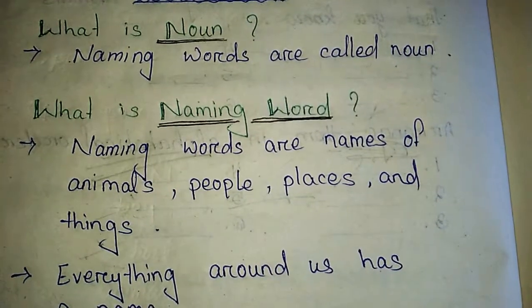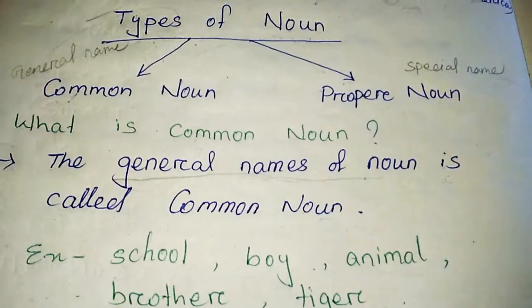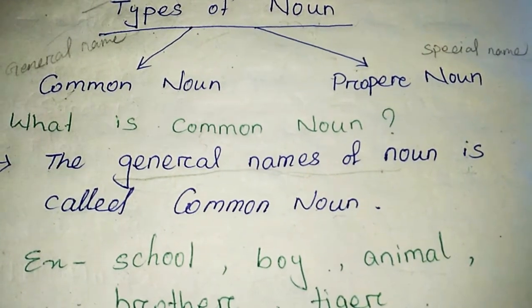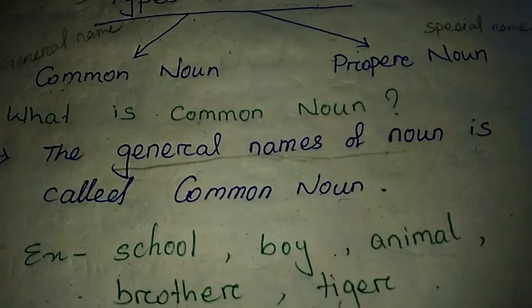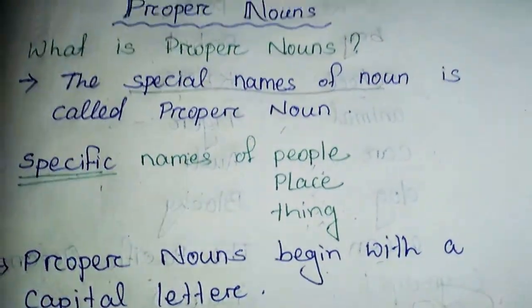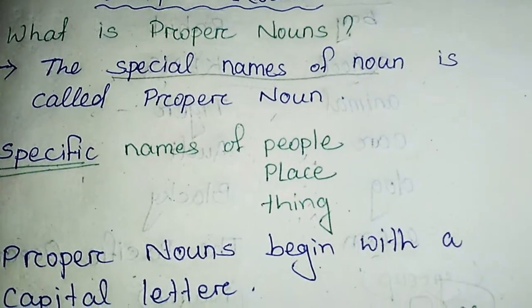Good morning students. Hope you all are fine. So now we are going to read the third chapter of your English language book, that is Proper Noun. Last class we discussed what is noun — that naming words are called noun. And there are two types of noun: one is common noun and another is proper noun. Common noun is the general names of noun, and proper noun is the special names of noun.